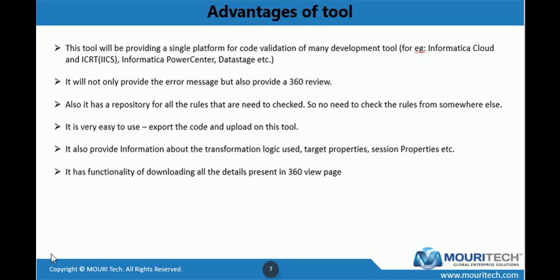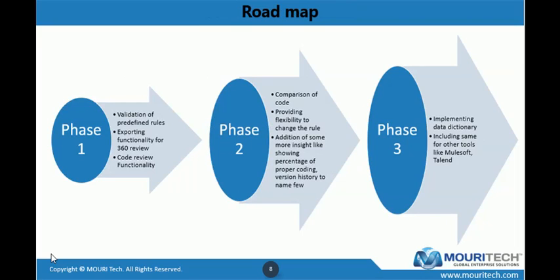The roadmap of this tool: Phase one covered validation of predefined rules, exporting functionality for 360 Review, and code review functionality — all of which has been done. Phase two involves comparison of code, providing flexibility to change rules, with an administrator who can change rules according to their organization, addition of more insights like showing percentage of proper coding and version history. Phase three will implement a data dictionary — a very powerful feature showing how data flows from source to target and which logic has been applied — and will also include support for other tools like Talend.